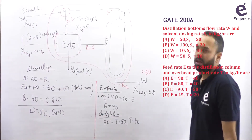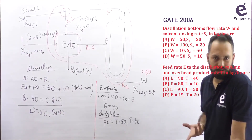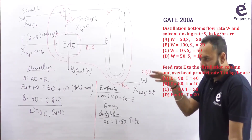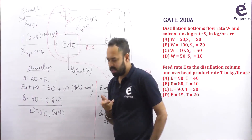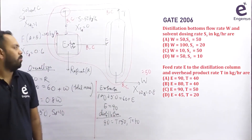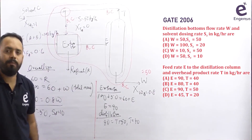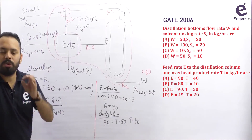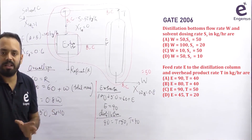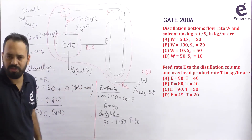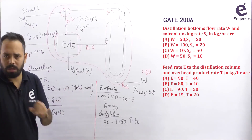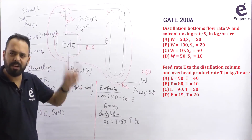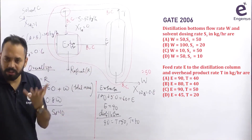This was the GATE 2006 problem. See how you can analyze this problem using degree of freedom analysis to know where to start. The solution is easy once you know that. However, always looking at solutions in books or on different websites will be harmful for you. Use the concepts given and apply them in different ways every time.